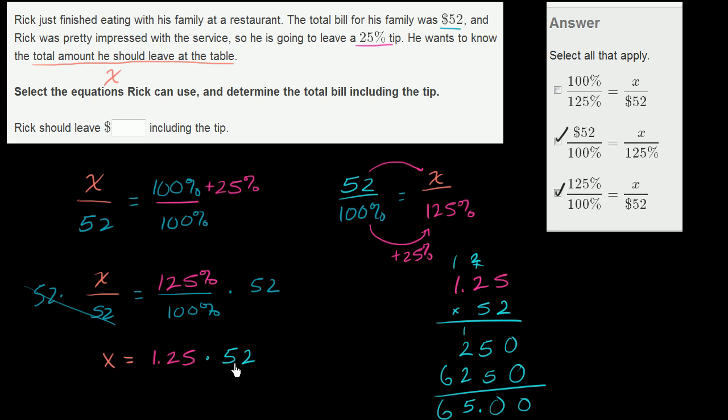And that's right. That's 52 plus a fourth of 52, which is 13. 52 plus 13 is 65. So he should leave $65 if we want to include the tip.